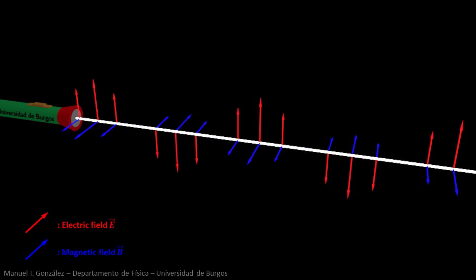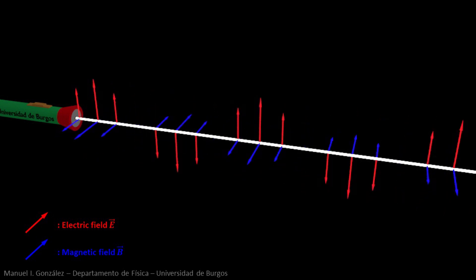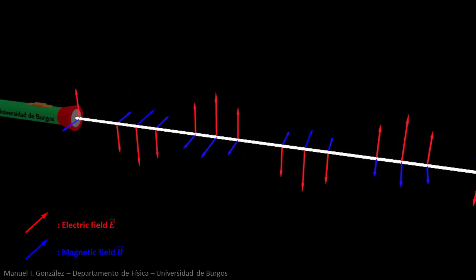Both fields are in phase. This means that if we focus on a specific point of the beam, they reach their maxima at the same time and cancel at the same time.